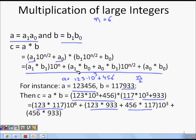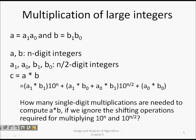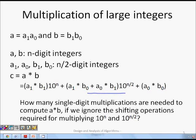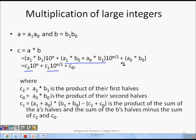Naively this requires four multiplications of n/2-digit numbers. But with the Karatsuba trick, c2 = a1×b1, c0 = a0×b0, and c1 = (a1+a0)×(b1+b0) − c2 − c0. Here c2 is the coefficient for 10^n, c1 for 10^(n/2), and c0 for 10⁰.